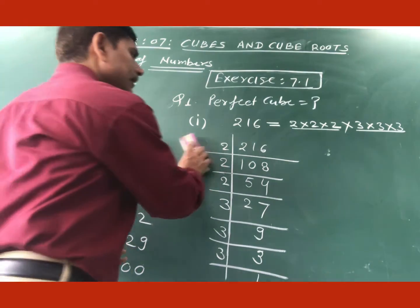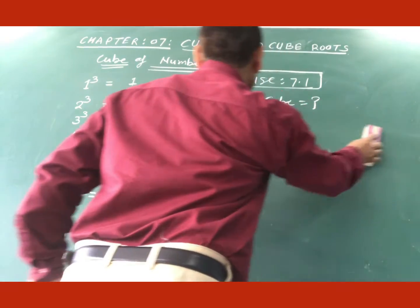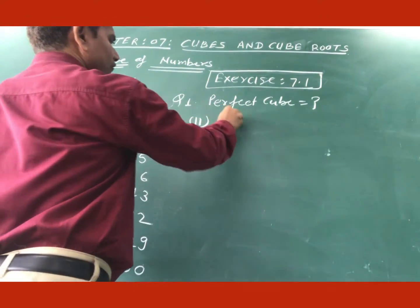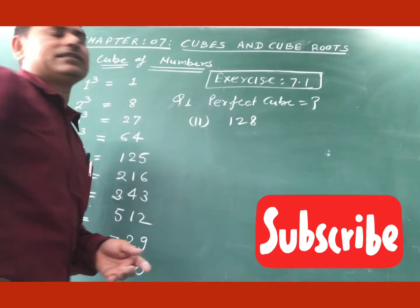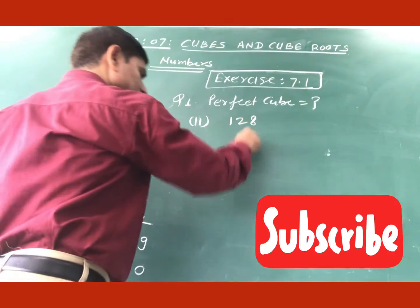Let us take one more question. Here, this is part number 2, this is 128. So this is the second part, 128. This is a perfect cube or not?